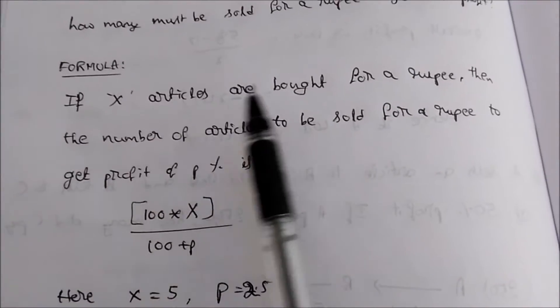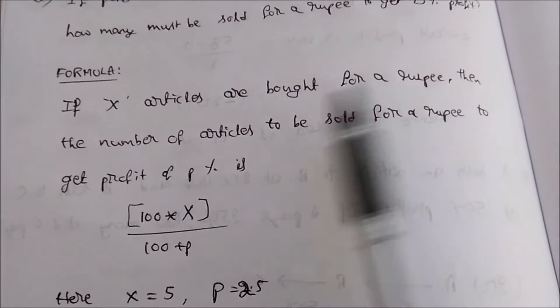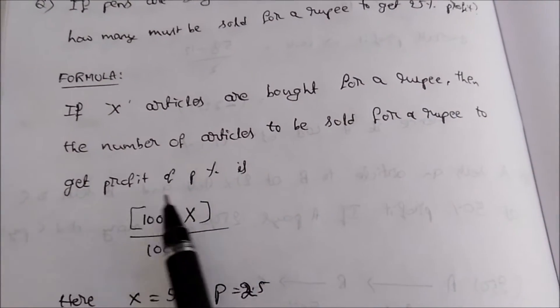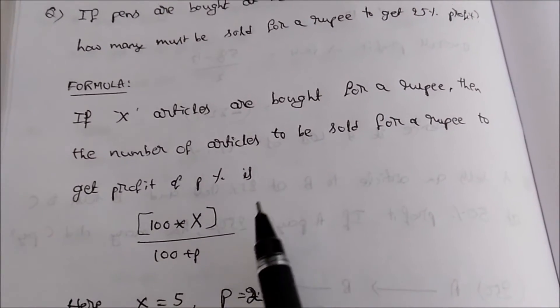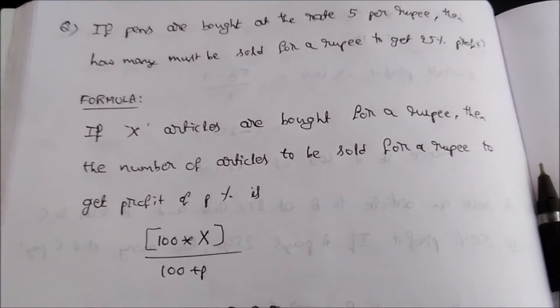If X articles are bought for a rupee, the number of articles to be sold for a rupee to get profit of P percent is 100 times X divided by 100 plus P. Thank you for watching this video, please subscribe to my channel.